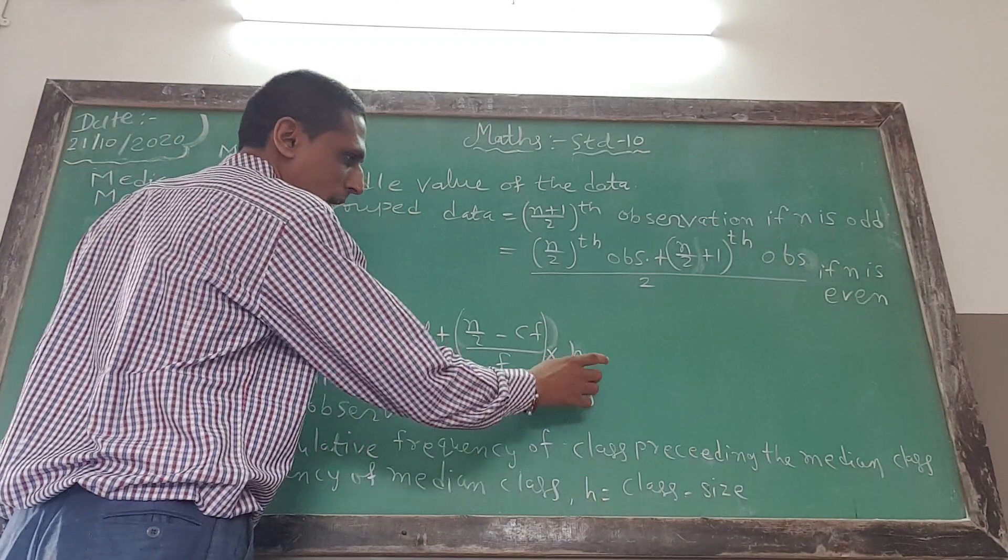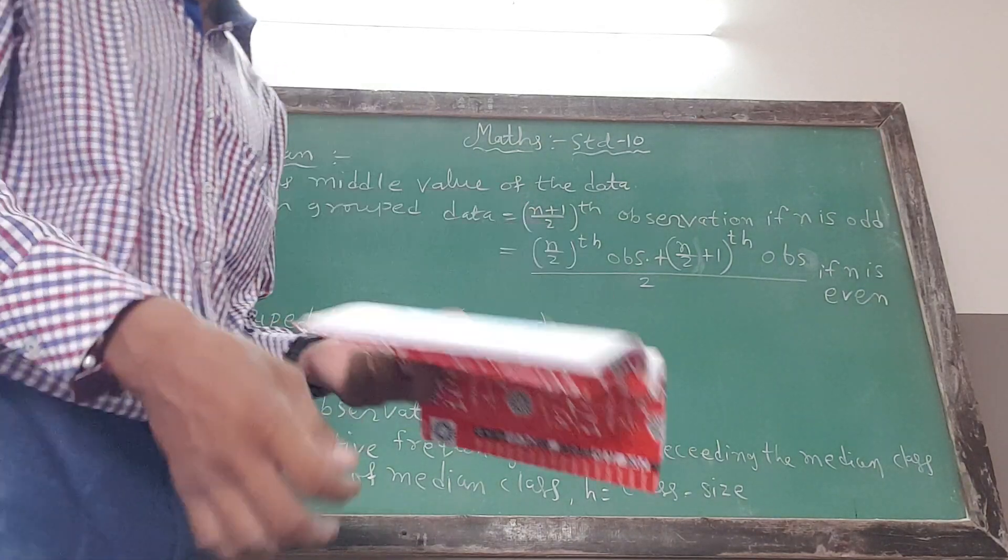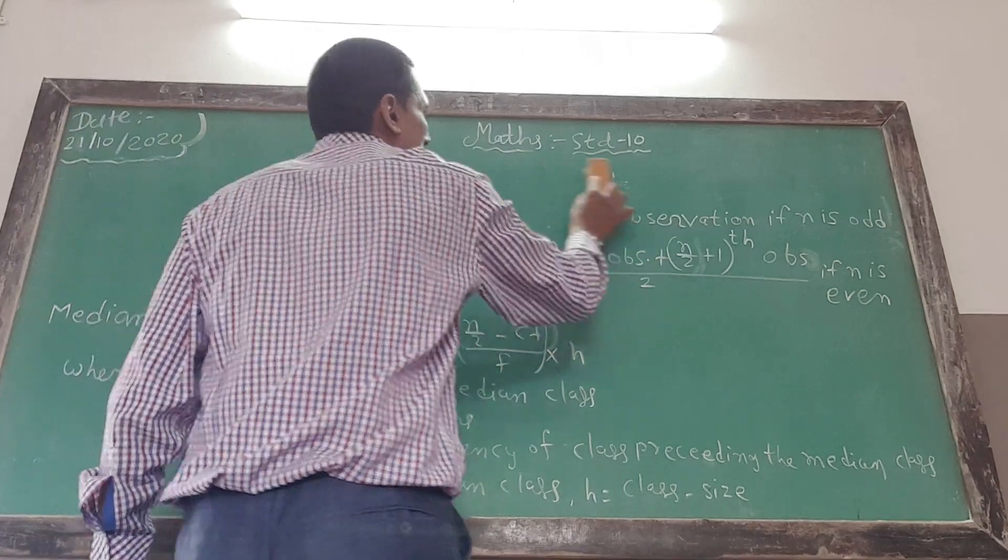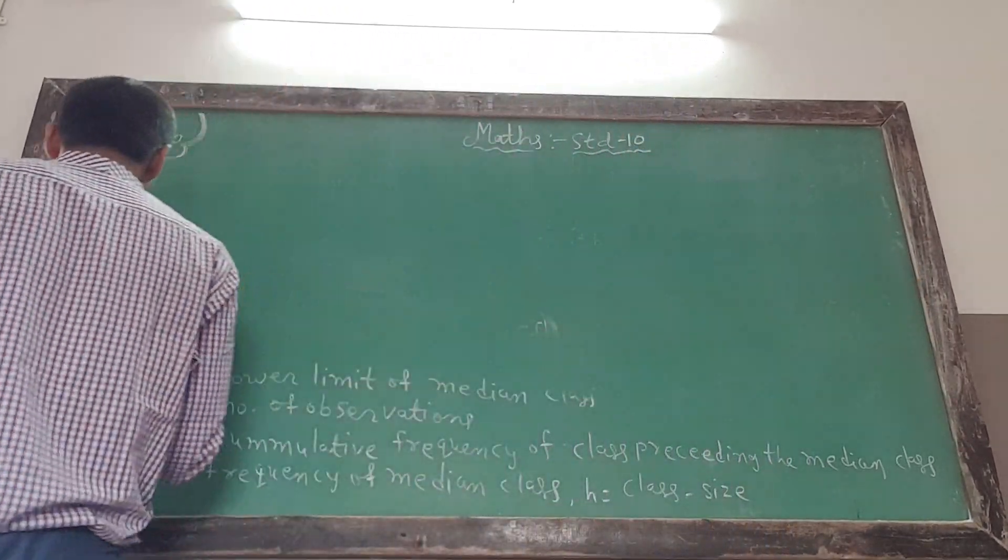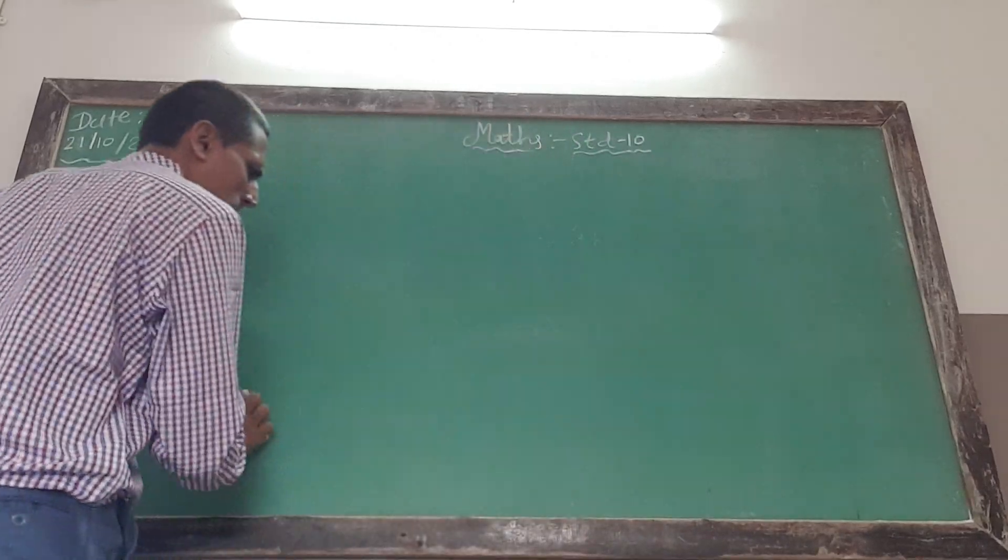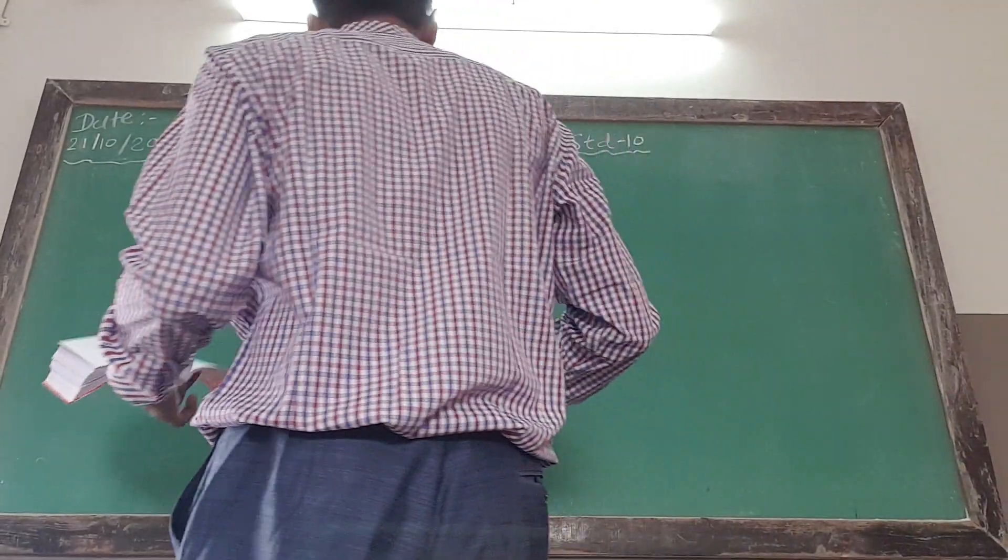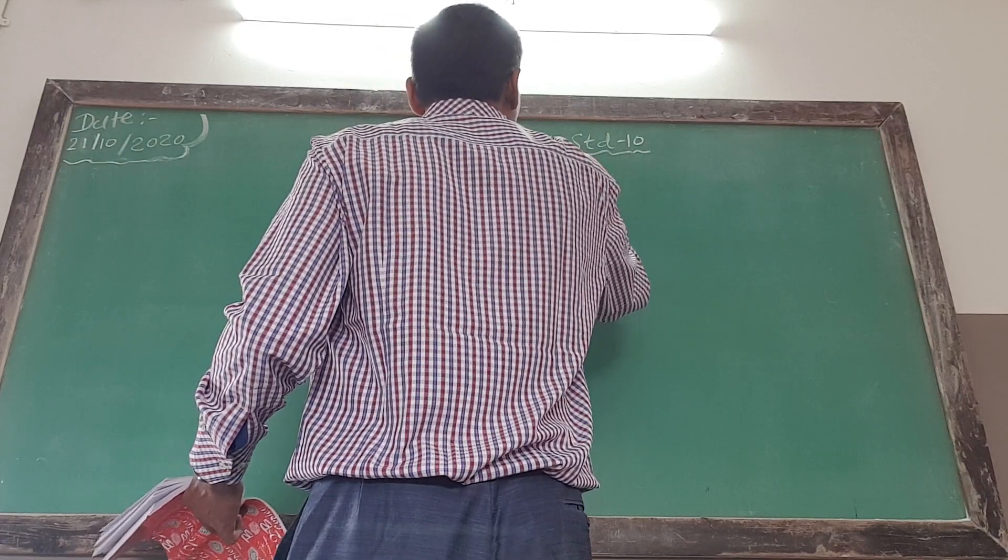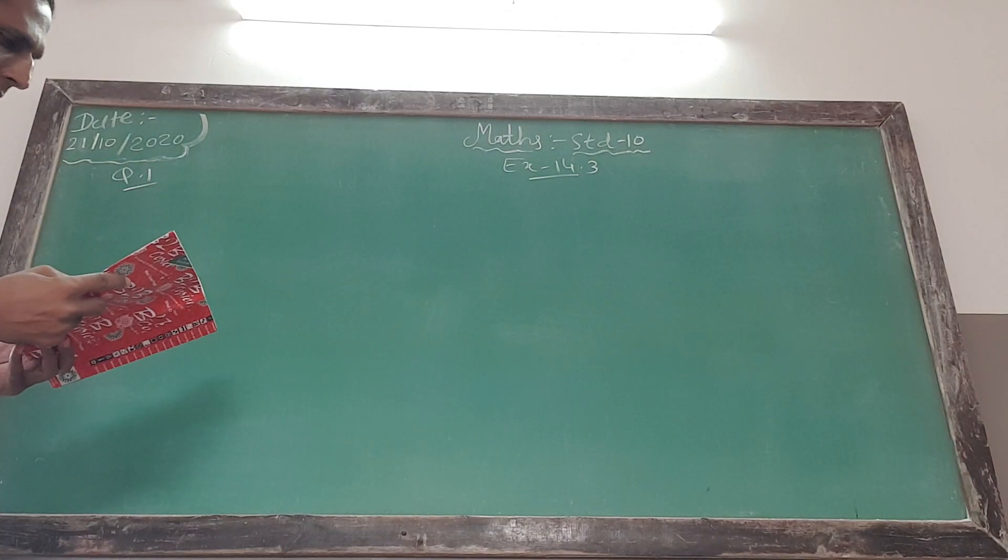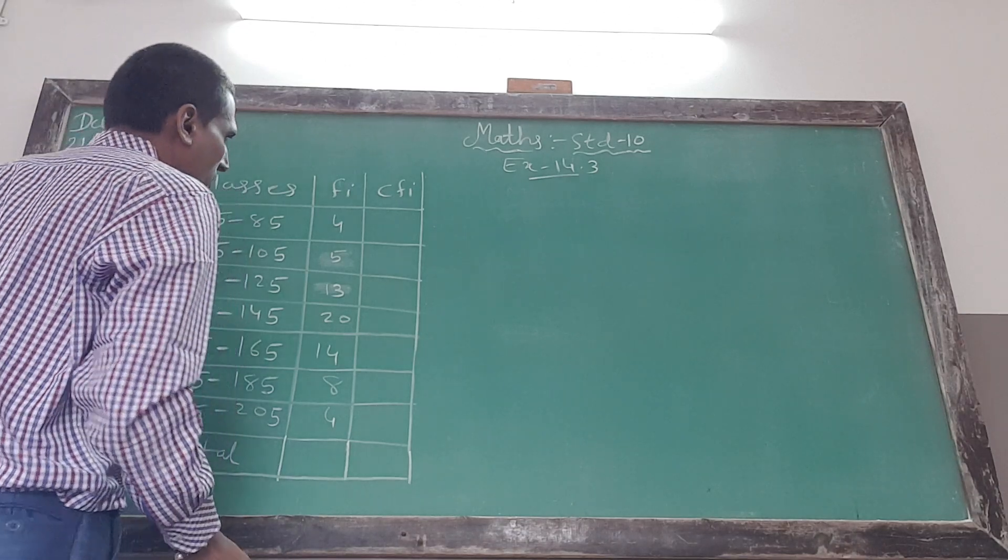And we will go to the number of observations. This is L plus size of class interval. CF is cumulative frequency. You can do the right movement. Now let's go - classes and frequency.